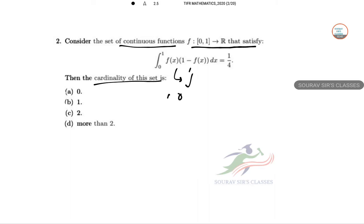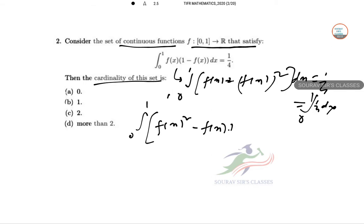Integral from 0 to 1 of [f(x) - f(x)]² dx = 1/4, that is integral from 0 to 1 of 1/4 dx, implying this in both sides. So now this part, integration 0 to 1 of f(x)² - f(x) + 1/4 dx = 0. So 0 to 1, this is a² - 2ab + b², so [f(x) - 1/2]² dx = 0.